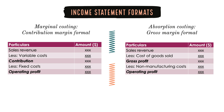Then we deduct all non-manufacturing costs from the gross profit to arrive at operating profit. Please note that the non-manufacturing costs may either be fixed or variable in nature. So an important point to note is that in marginal costing the income statement is split between variable and fixed costs, whereas in absorption costing the income statement is split between manufacturing and non-manufacturing costs.